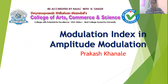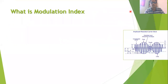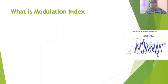In amplitude modulation, the carrier signal is changed in its shape. The original carrier signal has a fixed frequency and fixed amplitude, but in amplitude modulation the frequency remains the same while the amplitude of the carrier signal is changed in accordance with the information signal or modulating signal.